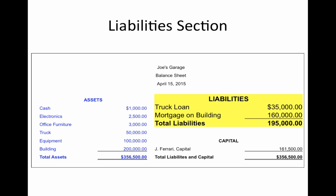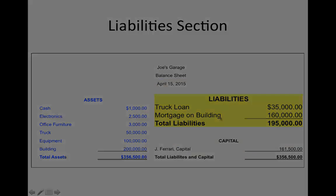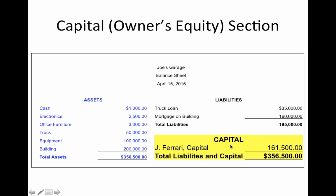The next section is called the liability section. Liabilities mean the things that we owe. For instance, in this case, Joe's Garage owes for a truck loan — he bought the truck and owns it, but still owes money on it. He also owes for the mortgage on the building — he owns the building, but still owes some money on it. The final section on the balance sheet is the capital section. This is the whole reason we actually do a balance sheet. The word capital means worth. So in this balance sheet for Joe's Garage, we're finding out how much this business is worth. Jay Ferrari, that's the owner of the company, the capital he has in the business comes to $161,500.